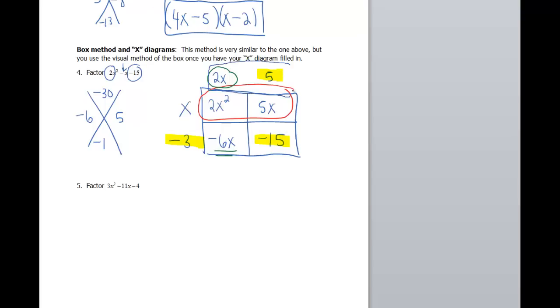Looking across the top up here, my one factor's going to be 2x plus 5. And looking across the side over here, my other factor's going to be x minus 3. We'll do one more like this.